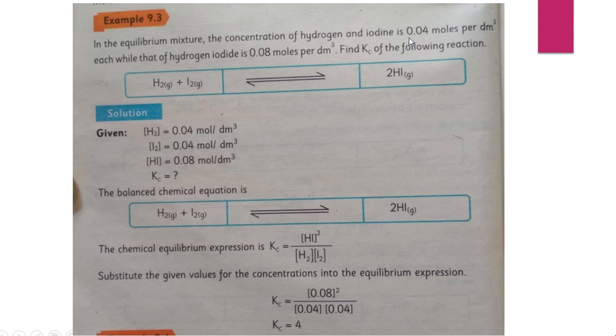The concentration of hydrogen is 0.04 moles per decimeter cube and also of iodine 0.04 moles per decimeter cube, while that of hydrogen iodide is 0.08 moles per decimeter cube. Find Kc of the following reaction.